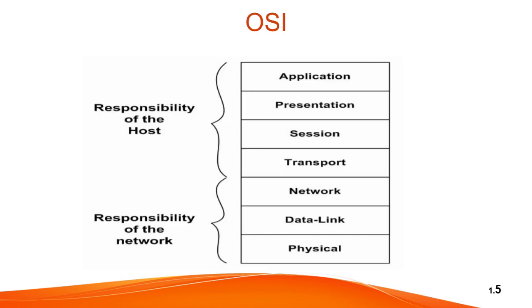These are the 7 layers as you can see on the screen: Physical layer, Data Link layer, Network layer, Transport layer, Session layer, Presentation layer, and Application layer.